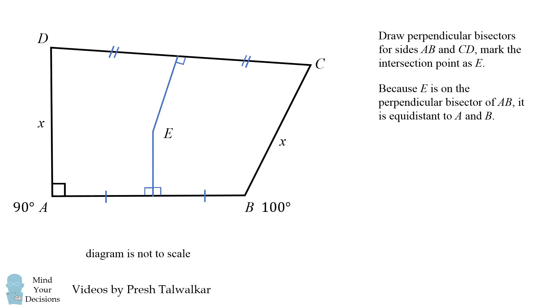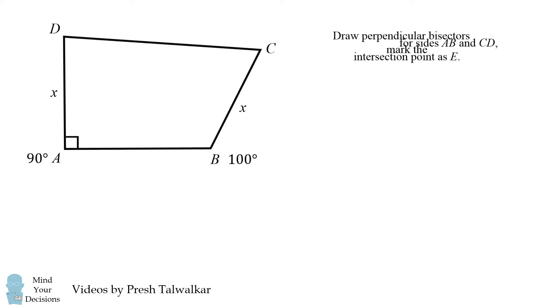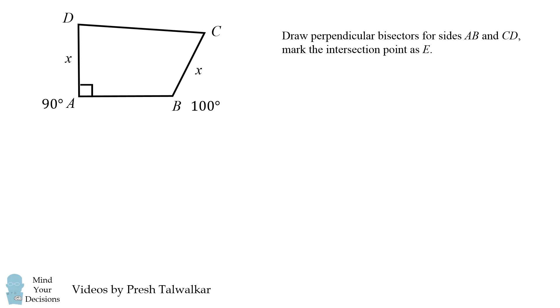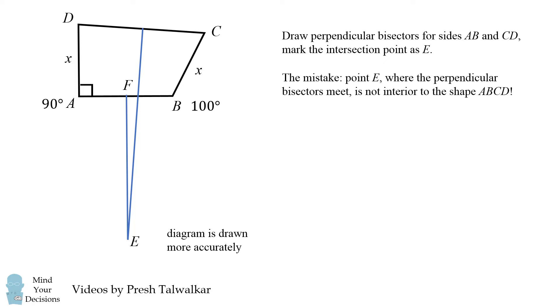So where is the mistake in this proof? To illustrate it I'm going to scale the diagram down because I'm going to draw the perpendicular bisectors a little bit more accurately. We'll draw the perpendicular bisector for AB and then we'll draw the perpendicular bisector for CD.